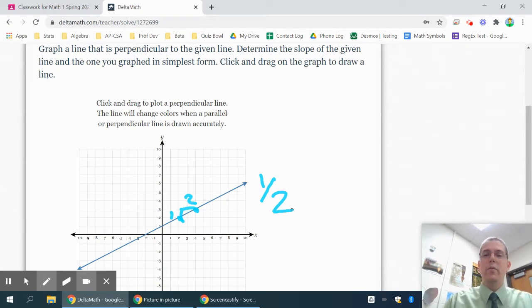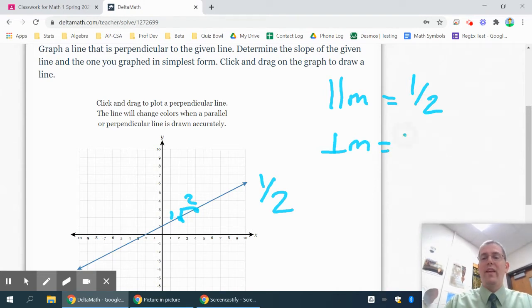Now any slope that is parallel to that, a parallel slope would be equal to one half because parallel lines have the same slope. Perpendicular lines have opposite reciprocals, so instead of being a positive one over two, it's a negative two over one. You see how you flip the fraction and change the sign.